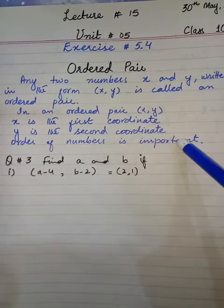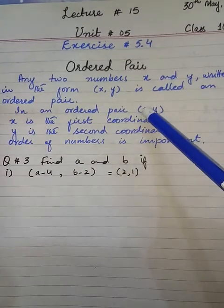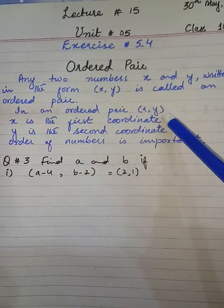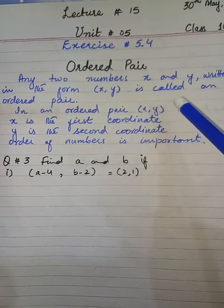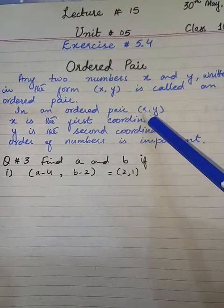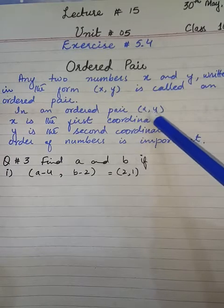Order of numbers is very important. You cannot write Y instead of X and X instead of Y. And in an ordered pair these two values depend on each other.